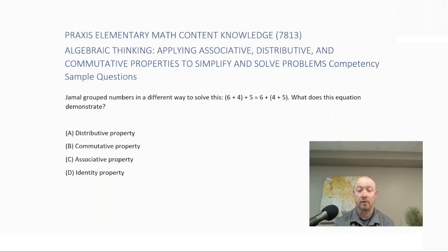Jamal grouped numbers in a different way to solve this: (6 + 4) + 5 = 6 + (4 + 5). What does this equation demonstrate? Is it A, distributive property, B, commutative property, C, associative property, or D, identity property?